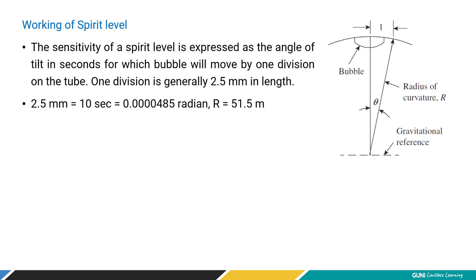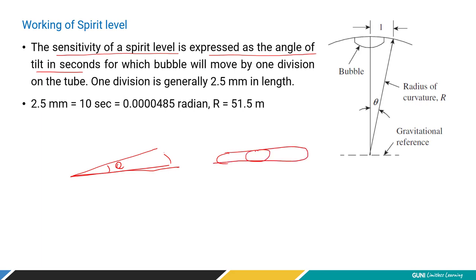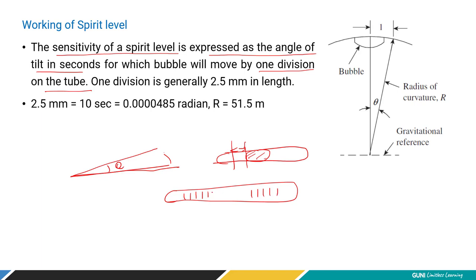The sensitivity of a spirit level is expressed as the angle of tilt in seconds. There is a reference horizontal and an angle of tilt. For which the bubble will move by one division on the tube — if you can define that angle of tilt, that is called sensitivity. It is similar to the least count.